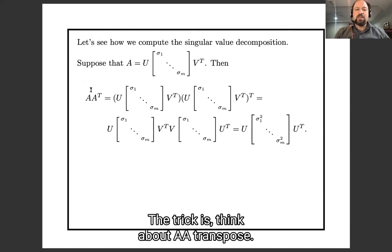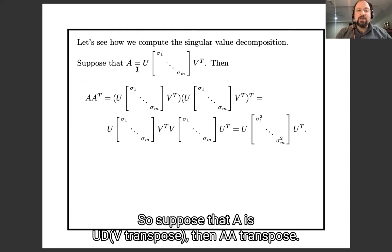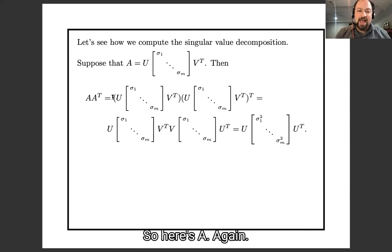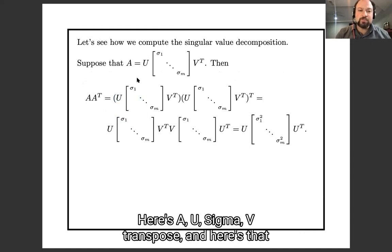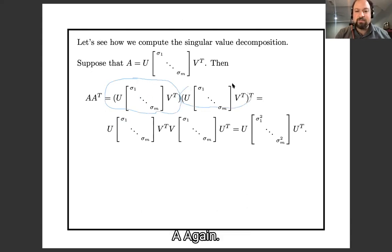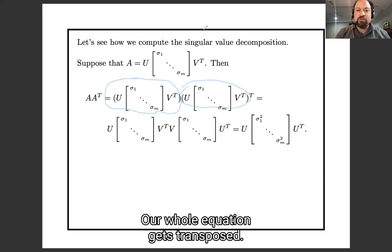The trick is, think about A, A transpose. So suppose that A is U, D, V. Then A, A transpose. So here's A again. Here's A, U, sigma, V, V transpose. And here's that A again. And then that whole equation gets transposed. Remember, when you transpose a product, the terms show up in the reverse order. So this V transpose gets transposed and shows up here as a V.